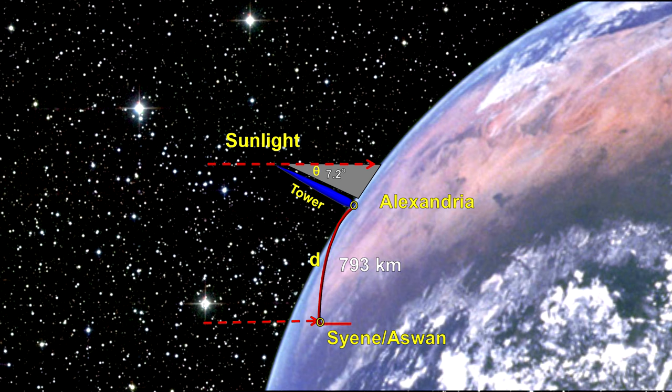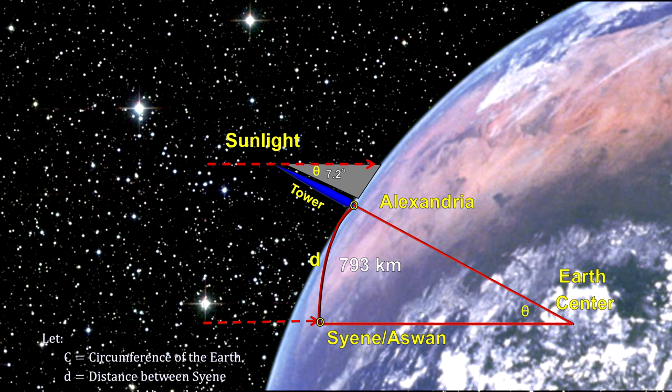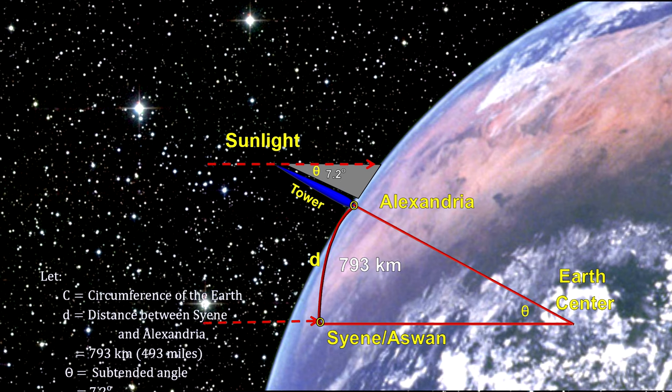Geometry tells us the angle measured at the tower is the same as the angle between lines connecting the two cities to the center of the earth. This is because when a straight line crosses parallel lines, it crosses them at the same angle. So, given that the angle is 1 50th of a circle, the distance between the cities will be 1 50th of the circumference of the earth.